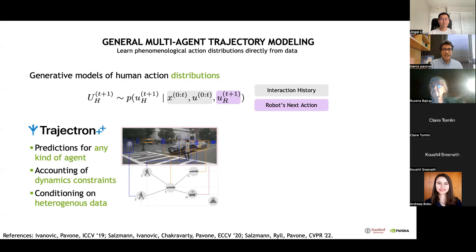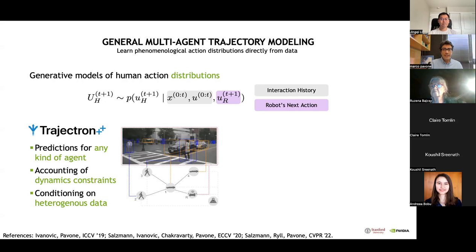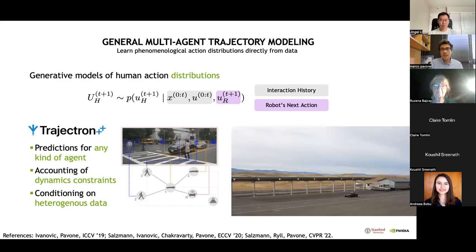Over the years we have developed a fairly general generative model to forecast human trajectories referred to as Trajectron++. This framework is based on a conditional variational autoencoder model and can ingest as conditioning variables a vast set of heterogeneous data, from dynamical information to maps encoding road boundaries and crosswalks, and even human silhouettes.